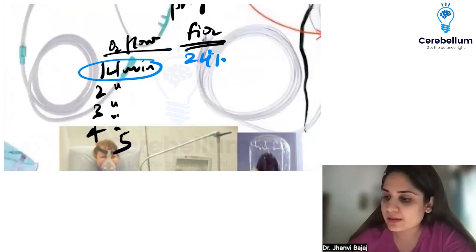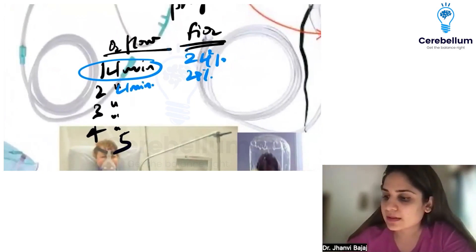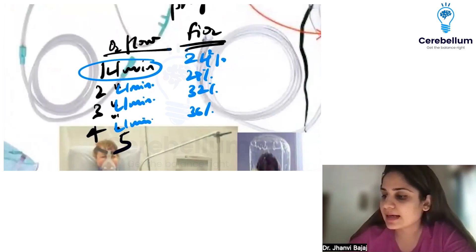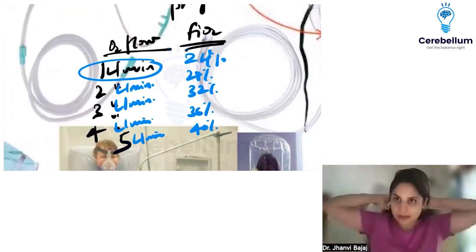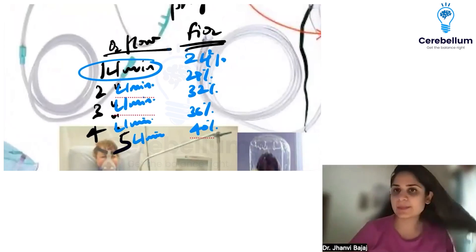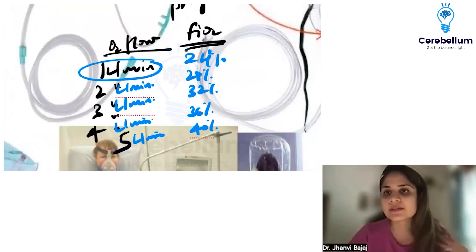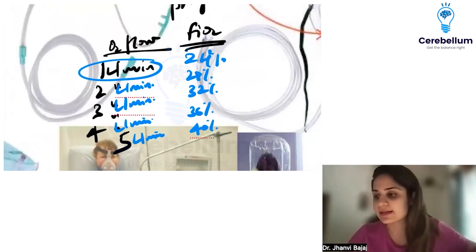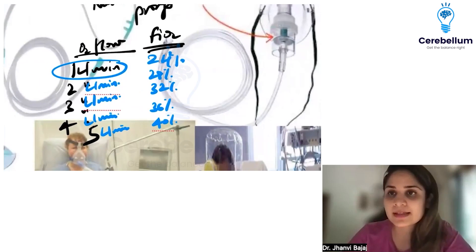So at 2 liters per minute it becomes 28%, at 3 liters per minute 32%, at 4 liters per minute 36%, and at 5 liters per minute it becomes 40%. The maximum FiO2 through simple nasal cannula is 40% at 5 liters per minute.